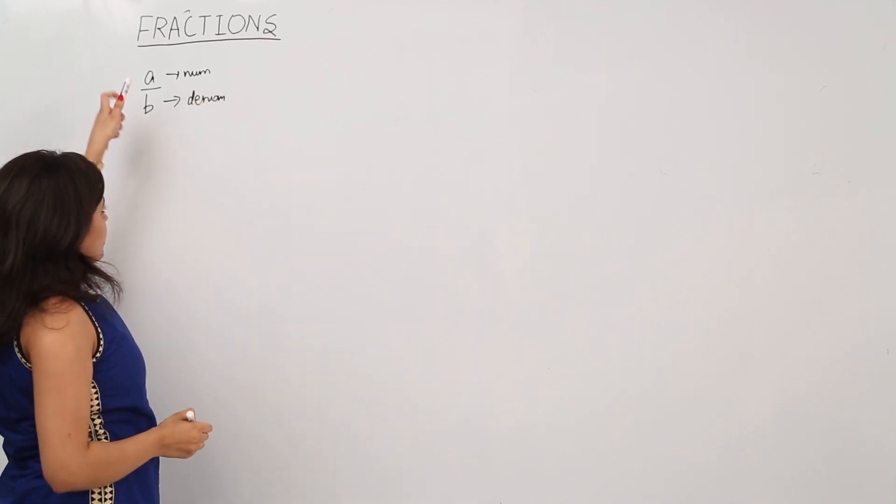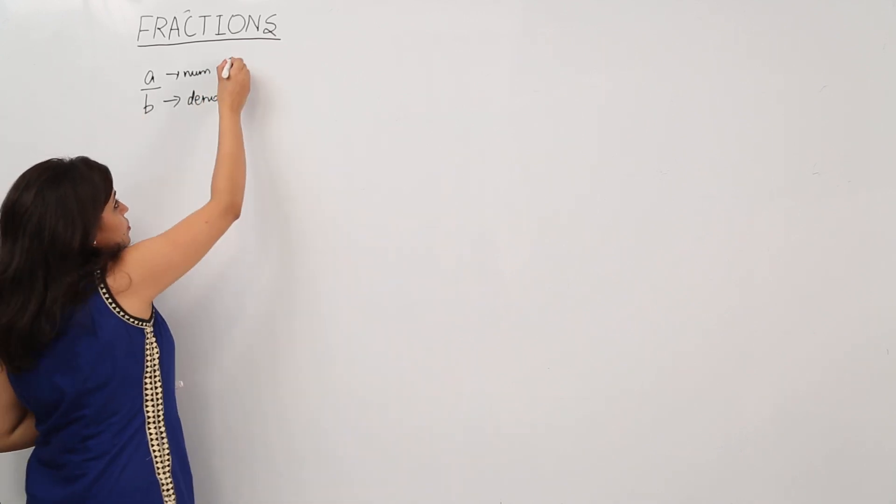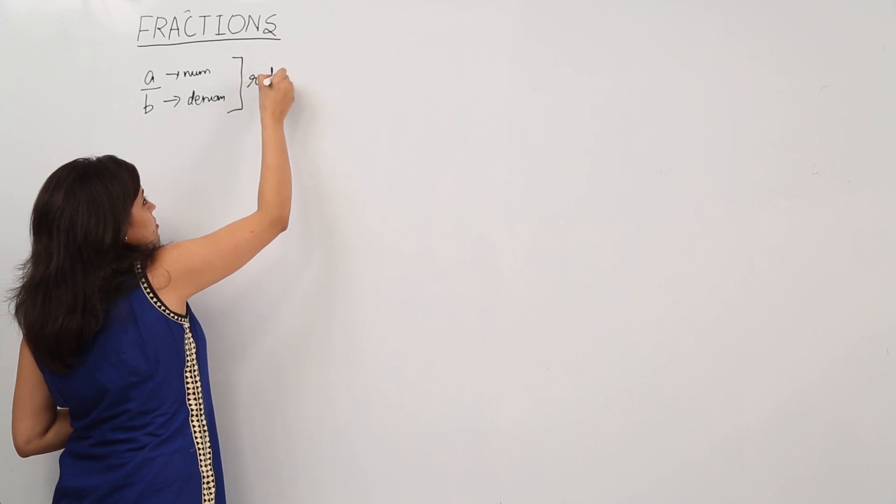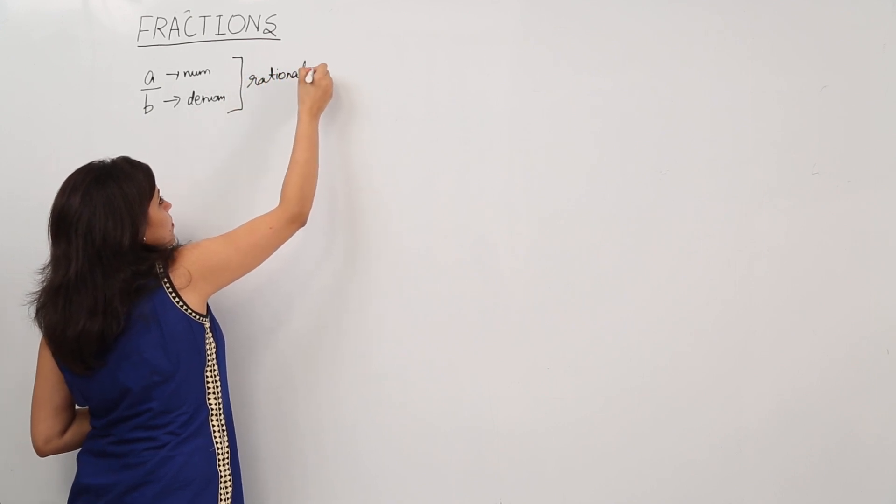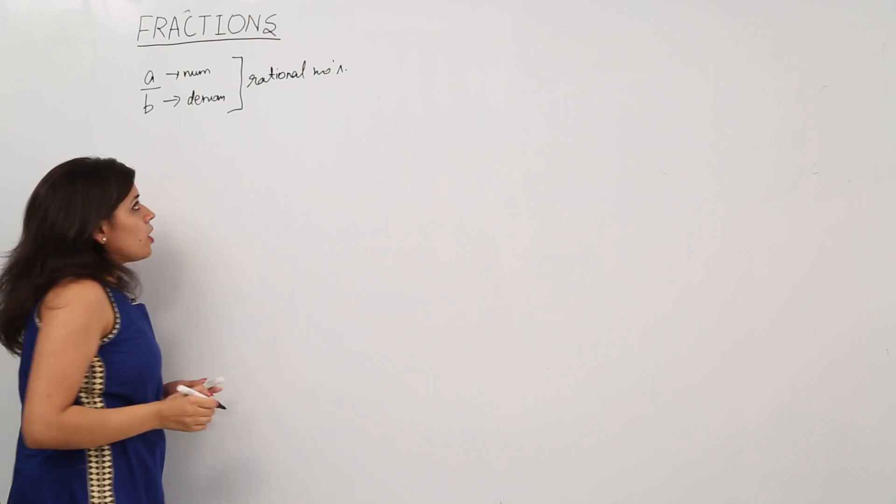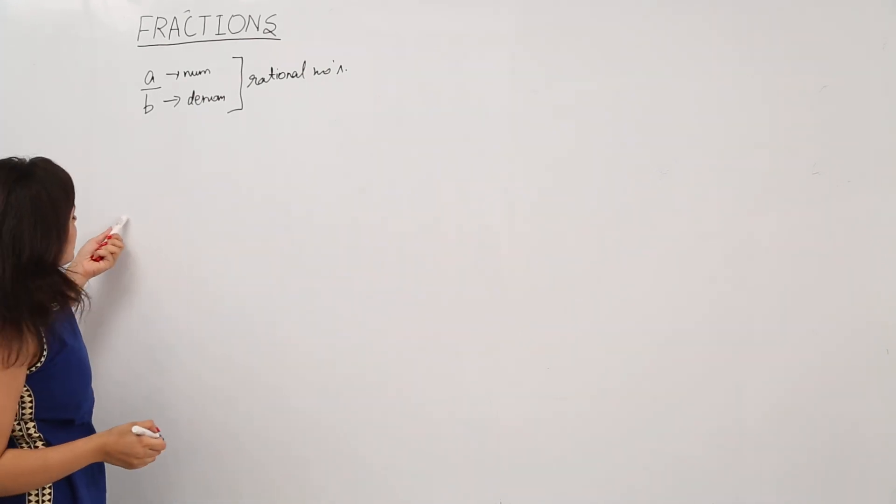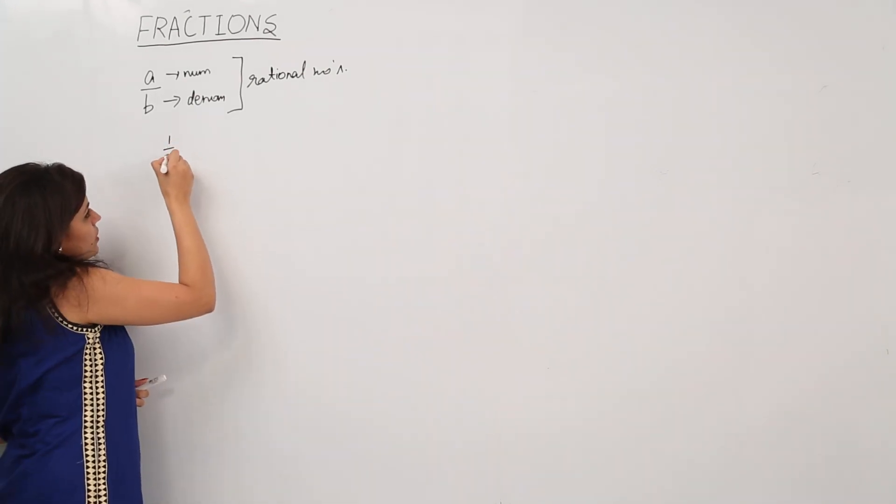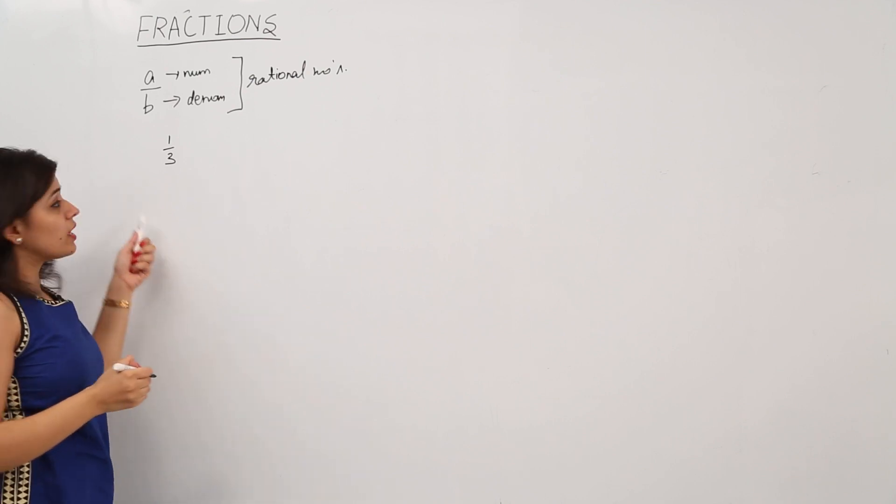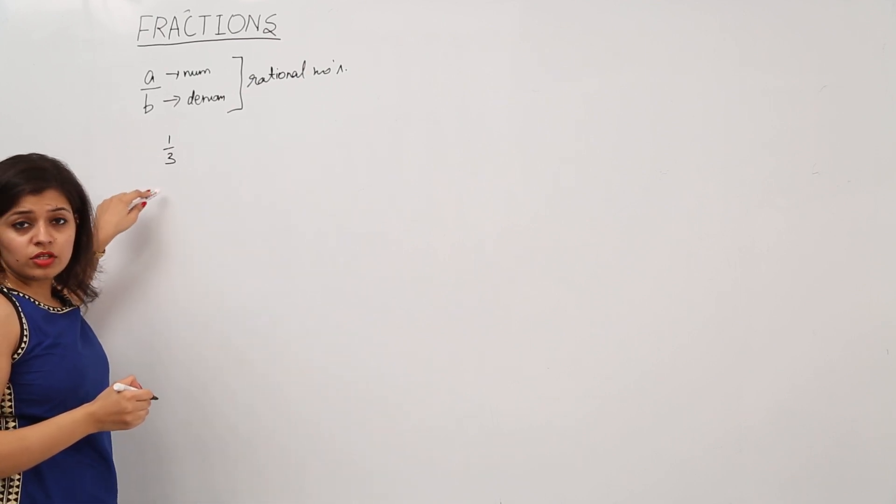Any number in the form of A by B is also known as a rational number. Now how are these numbers used? Let's say we have a number 1 by 3. This is a rational number where 1 is the numerator and 3 is the denominator.